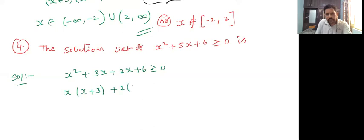Next two terms take 2 common, x plus 3 greater than or equal to 0. Now x plus 2, x plus 3 greater than or equal to 0.